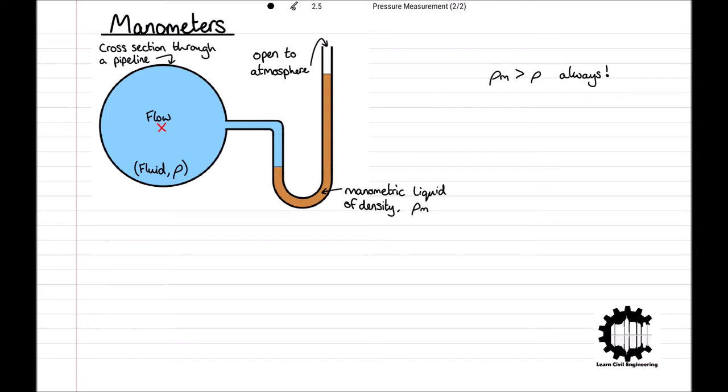Both fluids must also be immiscible for a manometer to function correctly. This just means that the two fluids do not mix and therefore a distinct interface forms between the two fluids. Additionally, in practice, the manometric liquid is often dyed with a contrasting color to the pipeline fluid. This just helps the observer identify the interface better.